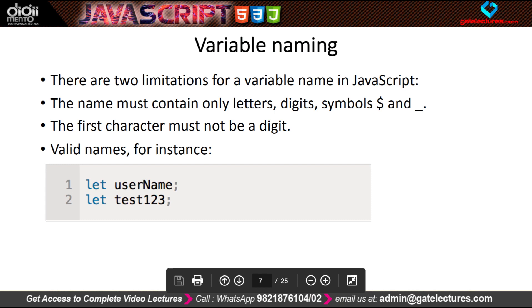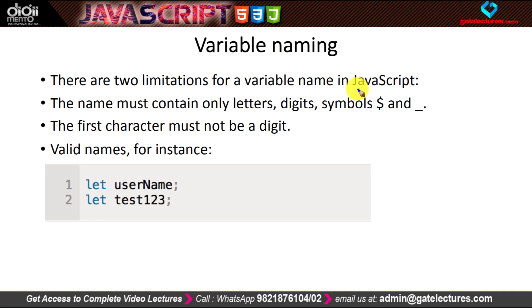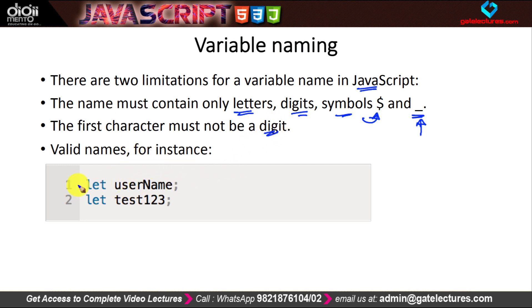For naming of variables, there are two limitations in JavaScript. First, the name must only contain letters, digits, the dollar symbol ($), and underscore (_). The first character cannot be a digit. For example, valid variable names are 'username' and 'test123'. Second, you cannot use reserved keywords as variable names — for example, you cannot use 'let' as a variable name.